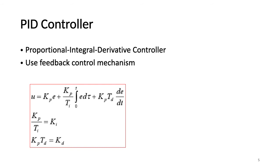This equation is the mathematical representation of the controller. K_P is the proportional gain, T_I is the integral time, and T_D is the derivative time. E is the error. K_P, K_I and K_D are all non-negative coefficients for the proportional, integral and derivative terms respectively.